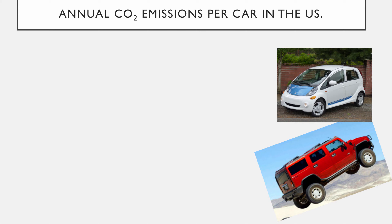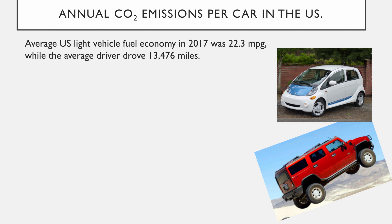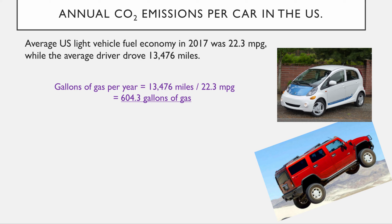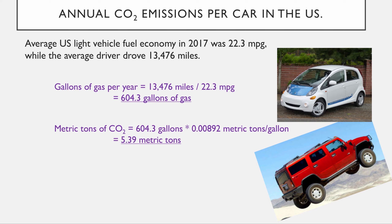Let's talk about annual CO2 emissions per car in the United States. In 2017, all cars on the road averaged about 22.3 miles per gallon — basically a Subaru — and the average driver drove about 13,500 miles per year. That works out to about 604.3 gallons of gas per driver per year. Each gallon of gas emits about 0.00892 metric tons of CO2, meaning each driver emits about 5.39 metric tons of CO2 per year.